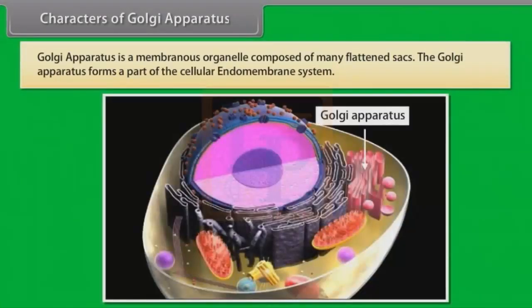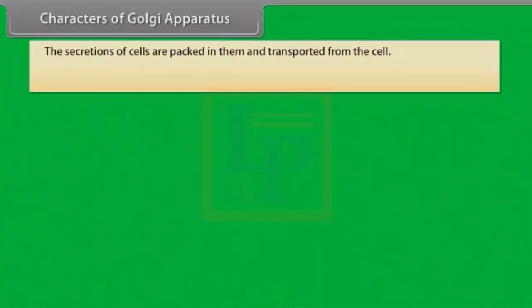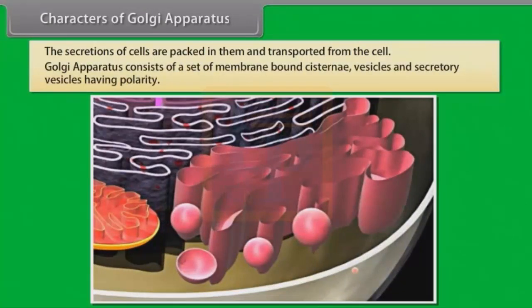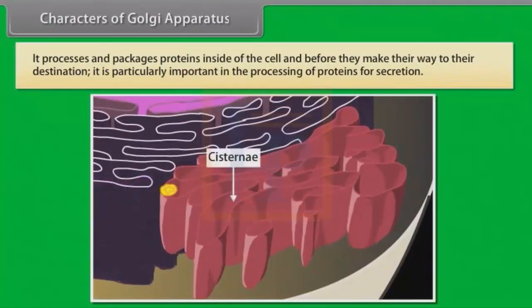Golgi apparatus is a membranous organelle composed of many flattened sacs. It forms a part of the cellular endomembrane system. It was identified in 1898 by the Italian physician Camillo Golgi, after whom it is named. The secretions of cells are packed in them and transported from the cell. Golgi apparatus consists of a set of membrane-bound cisternae, vesicles and secretory vesicles having polarity. It processes and packages proteins inside the cell before they make their way to their destination, and is particularly important in the processing of proteins for secretion.